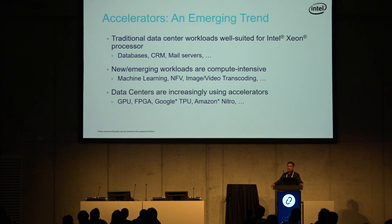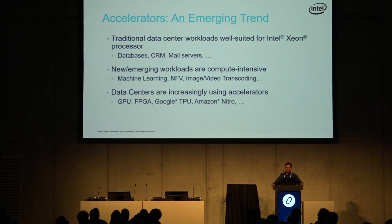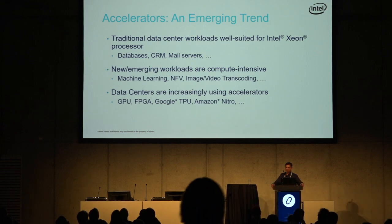If you look at traditional data center workloads — if you're running a database or a mail server — your traditional Xeon type of server processes are a good fit for that. In fact, they're optimized for that. That's what we've been using over the decades. But there are new and emerging workloads which are very compute intensive, difficult to execute on a general purpose processor.